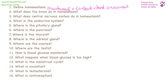What does the brain do in homeostasis? This is the control center of everything. The nervous system does quite a lot in homeostasis. It controls heart rate, breathing, as well as the urinary system and the digestive system.